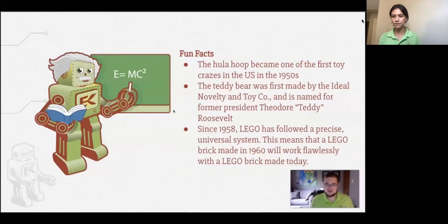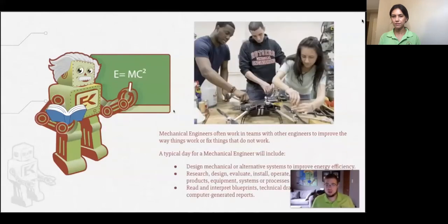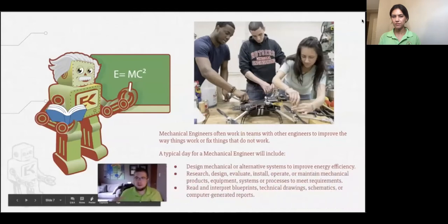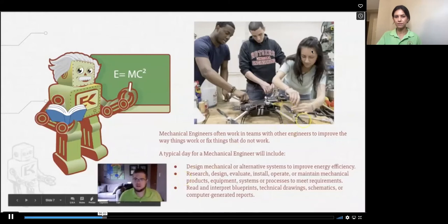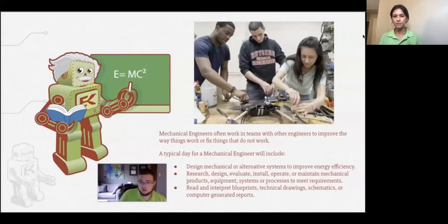Mechanical engineers often work in teams with other engineers to improve the way things work or fix things that don't work. Here's a team of engineers working on a drone — a machine that flies in the air using four propellers. A typical day for a mechanical engineer will include designing mechanical or alternative systems to improve energy efficiency — for example, working on this drone so it doesn't use as much battery power.